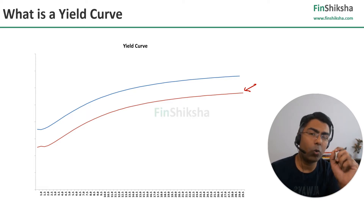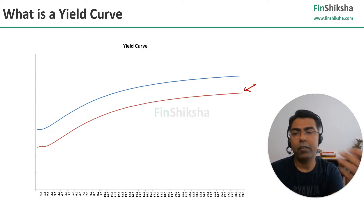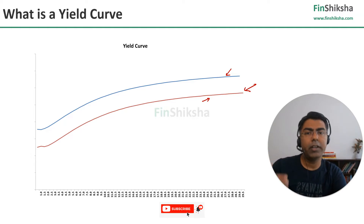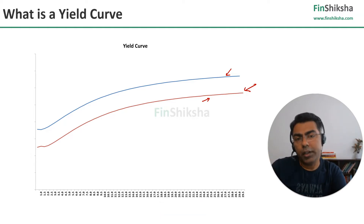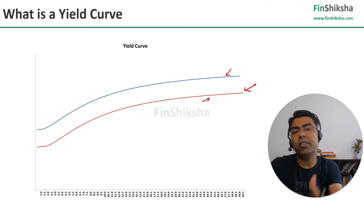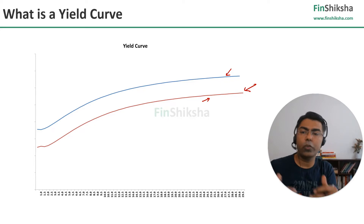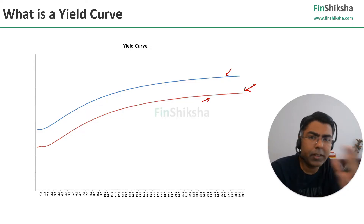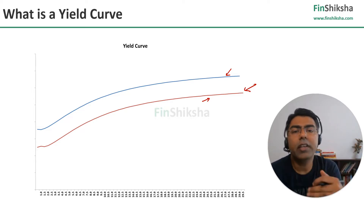Remember, Yield Curves are only for one issuer. So, for example, this red one could be for a particular country and the blue one could be for another country. And there's a spread clearly telling you that the blue Yield Curve has a risk premium built into it, because investors perceive those bonds to be riskier compared to the bonds of the red Yield Curve. That's the representation of a Yield Curve.